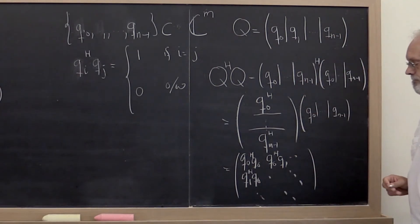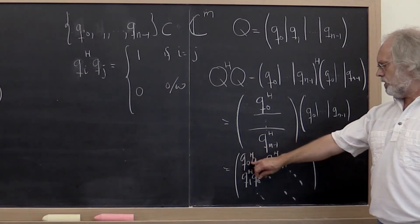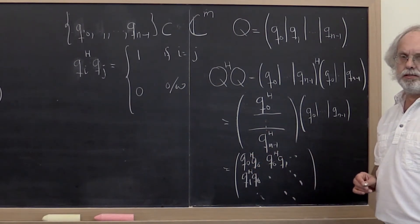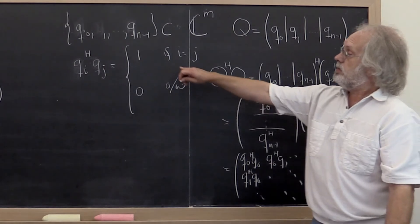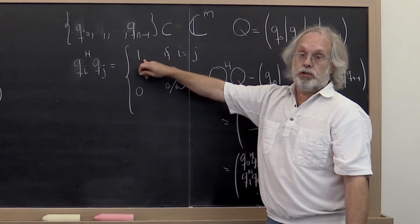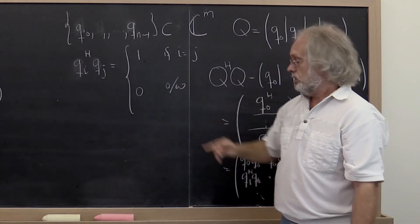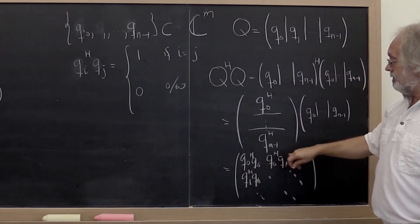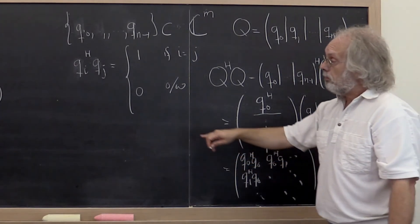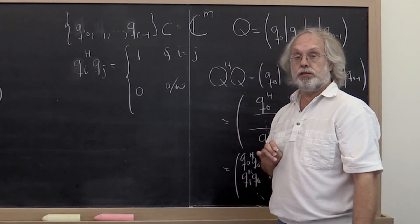What do we know about the diagonal elements? They're all equal to 1. What do we know about the off diagonal elements? They're all equal to 0.